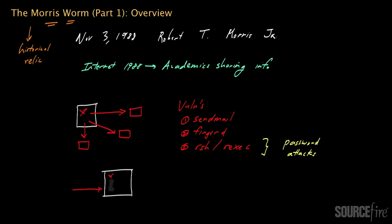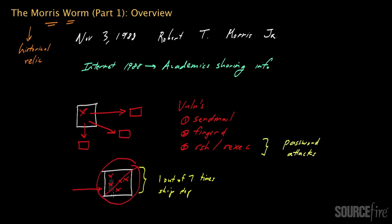However, Robert Morris Jr. decided to put in a small bit of code so that one out of every seven times this self-destruction step would be skipped. This one nuance — this seemingly tiny degree of replication — ended up making literally all the difference. Gradually, more and more copies of the worm started running on a given system, sucking up resources. As the system got busier and busier running more and more instances of the worm, it became less and less able to service regular requests, and basically became so bogged down that it was otherwise inoperable.